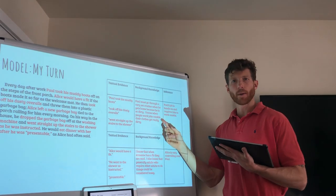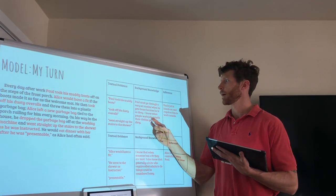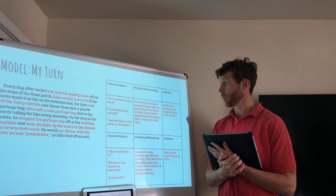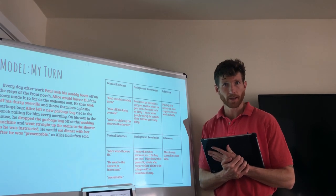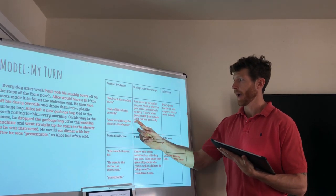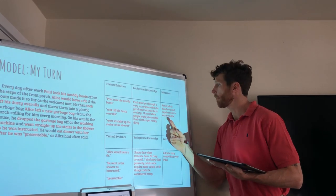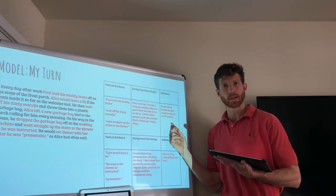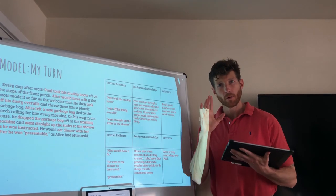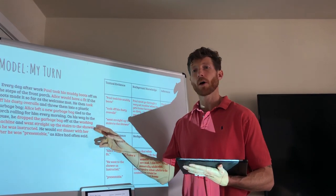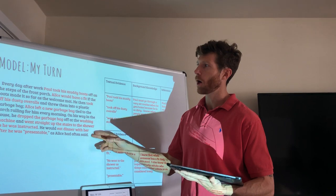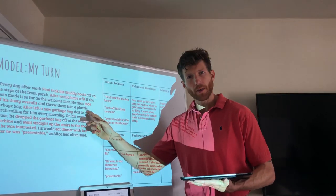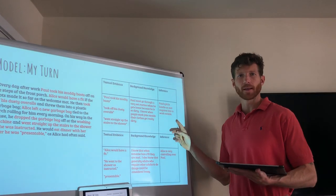Now I'm going to add this evidence to my background or prior knowledge. Paul must go through a very set routine when he gets home because he is so dirty. I know that when people work jobs outside, their clothes get really dirty. So I'm taking this evidence, adding it to my background knowledge, and I come up with this inference: Paul's job is hands-on and requires him to work outside. The author never explicitly says Paul works a job that requires him to be outside and use his hands, but based on all the evidence the author gave us, we can accurately make this inference.